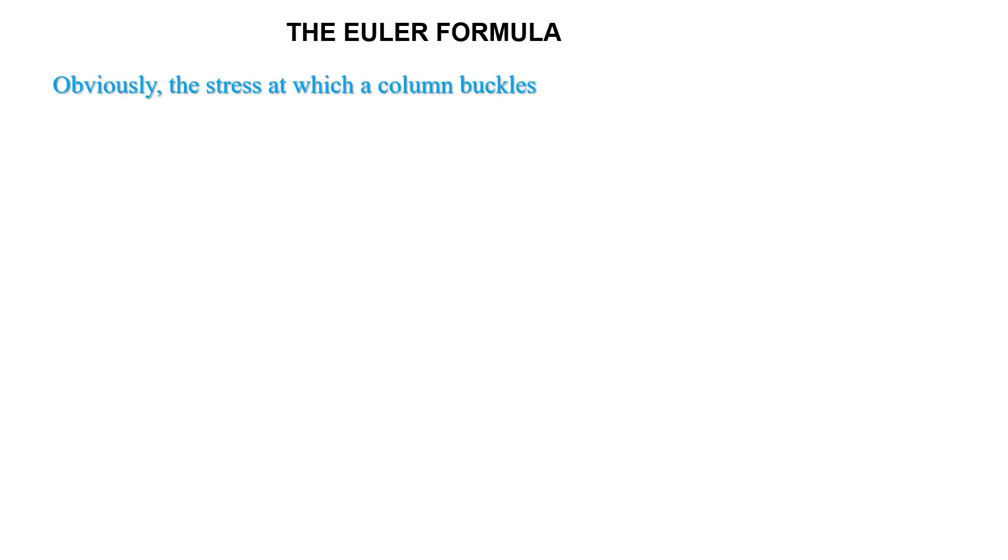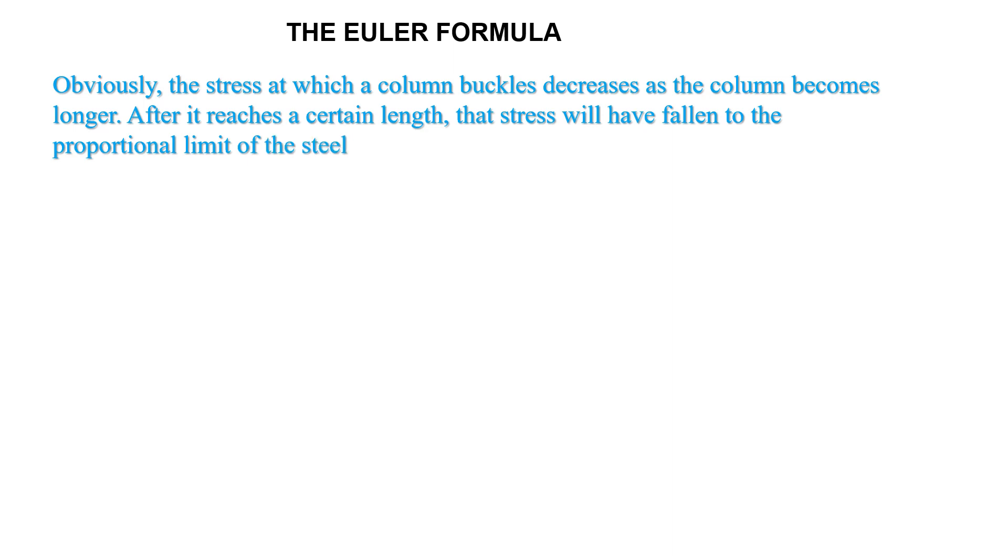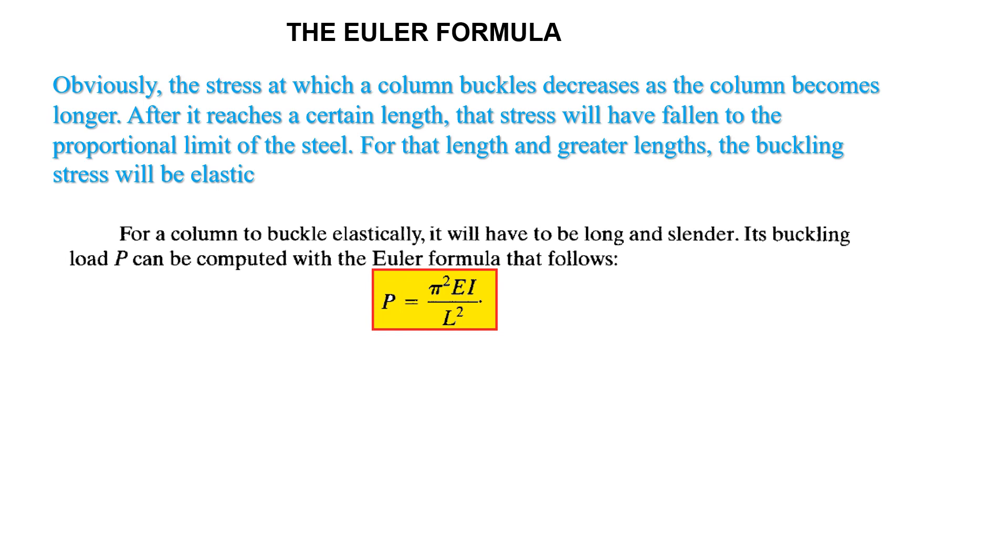The Euler formula: Obviously, the stress at which a column buckles decreases as the column becomes longer. After it reaches a certain length, that stress will have fallen to the proportional limit of the steel. For that length and greater lengths, the buckling will be elastic. For a column to buckle elastically, it will have to be long and slender.